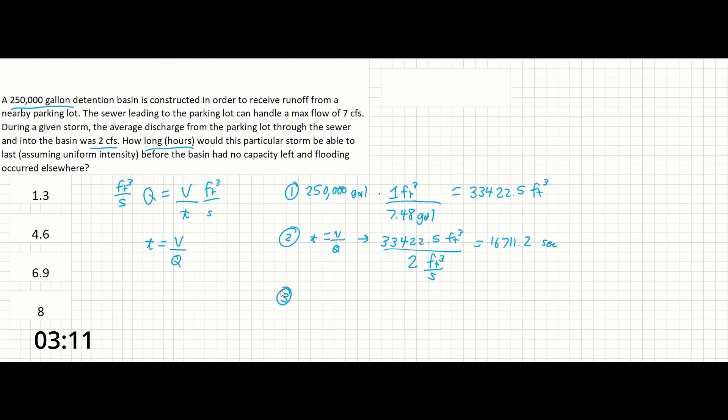All we have to do now is convert that into hours. So 16,711.2 seconds times 1 minute over 60 seconds times 1 hour over 60 minutes gives us 4.6 hours.